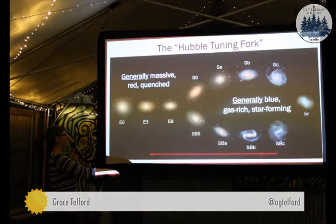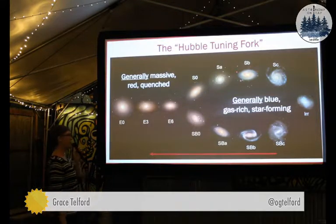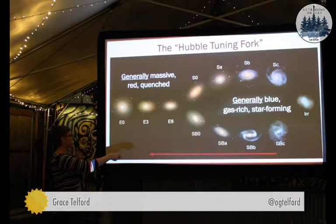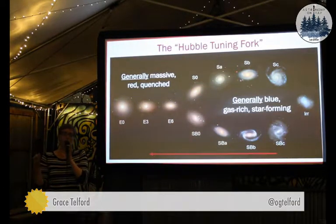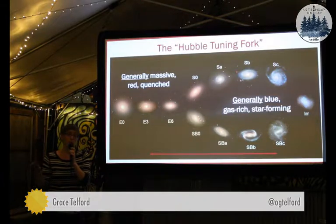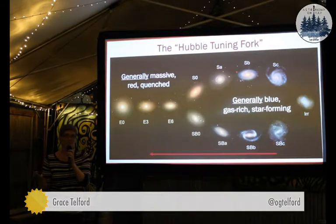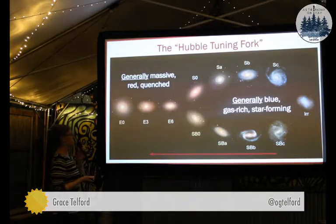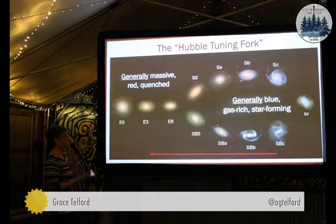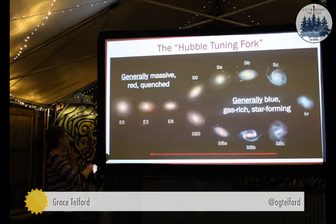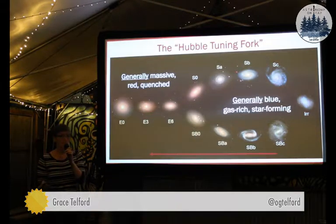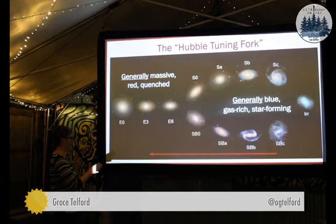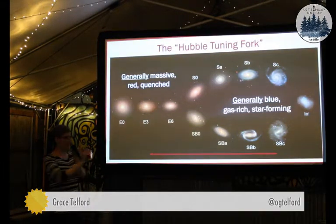Modern understanding is that, generally speaking, things on the right of this diagram turn into things on the left. Things over here are blue galaxies — the blue light is due to the bluer light that is output by young, short-lived stars. So if you don't have recently formed stars, your galaxy is not going to look blue. They have a lot of gas, and they're still forming their stars. Over here, the elliptical galaxies tend to be pretty massive. They tend to have a red color because they don't have any new stars — because they are quenched.